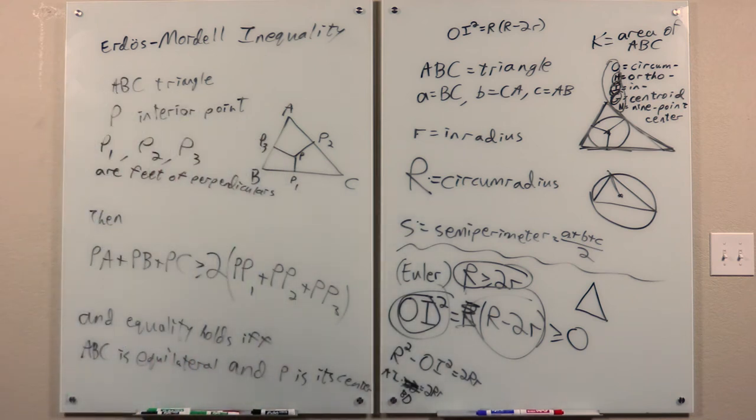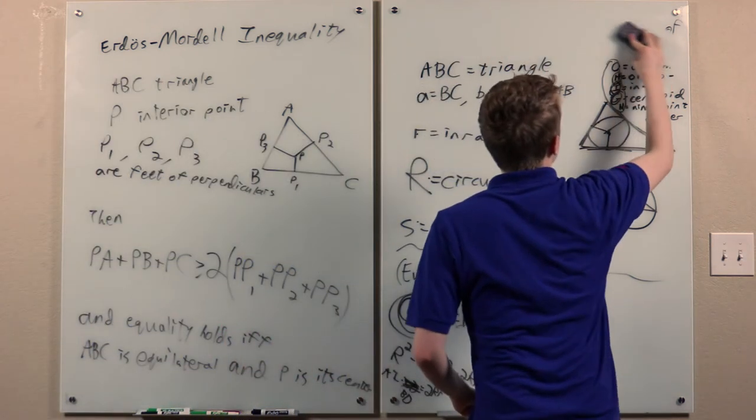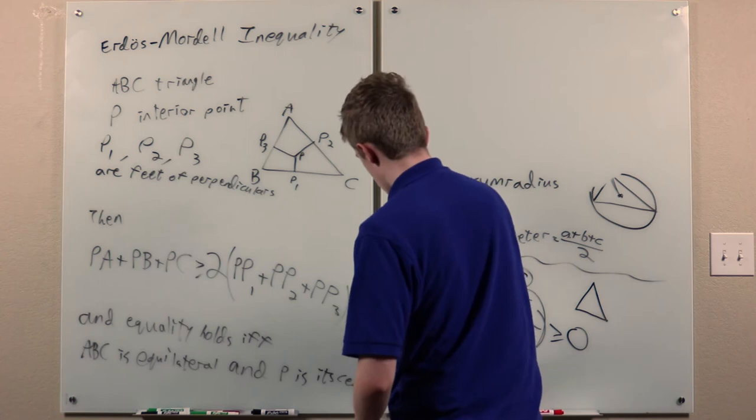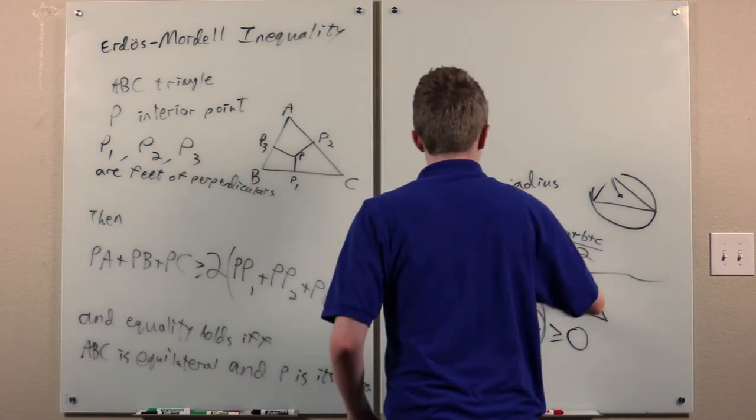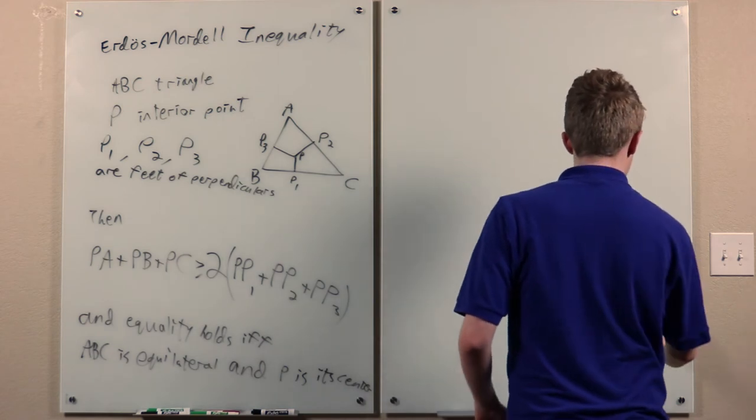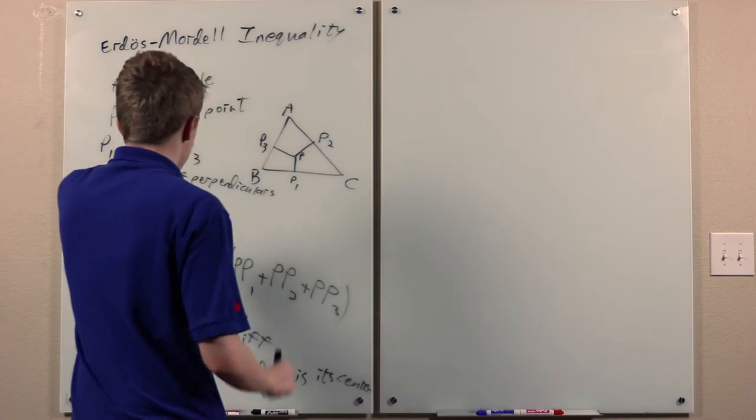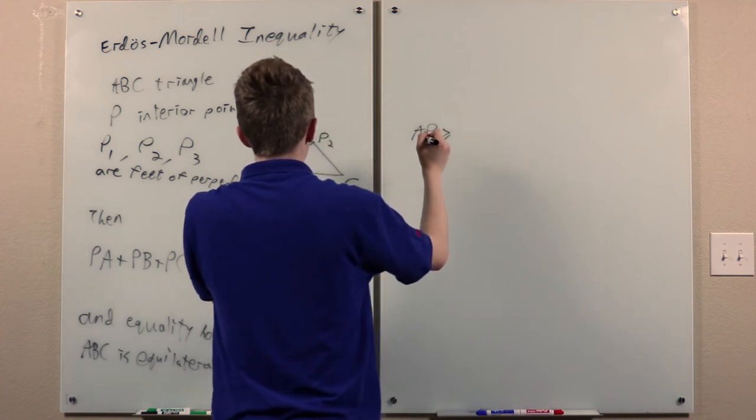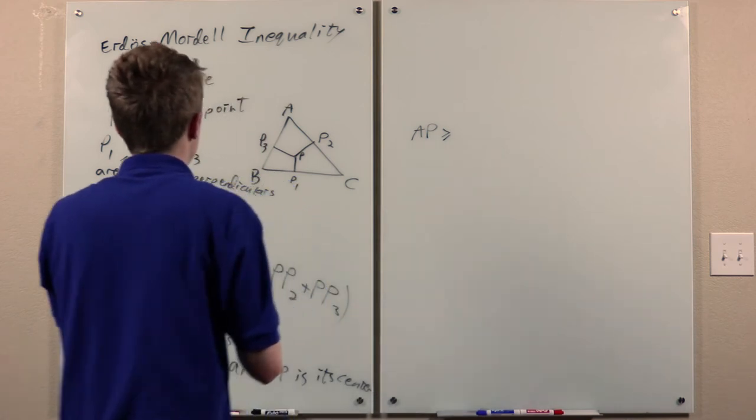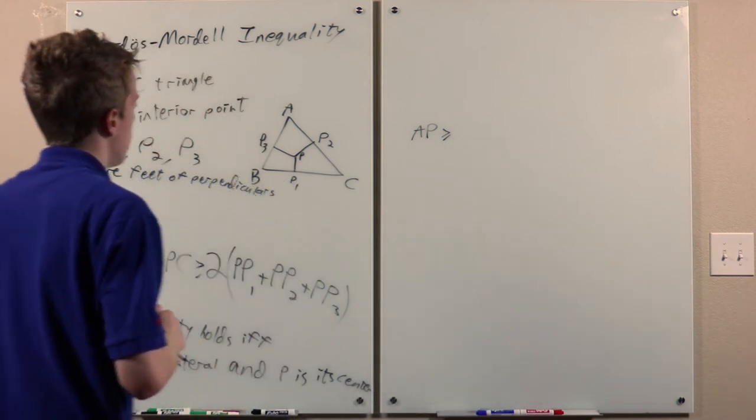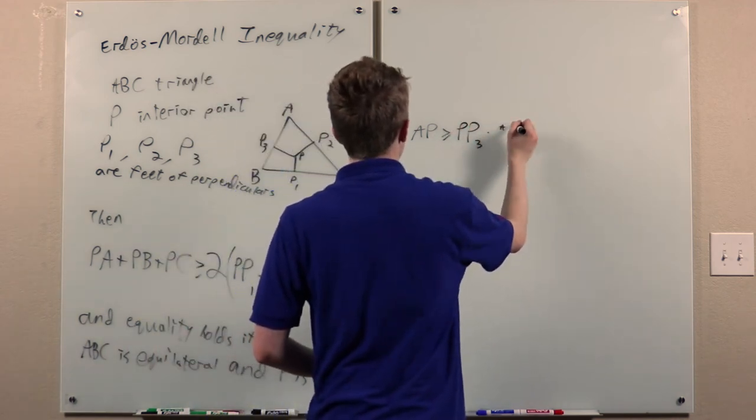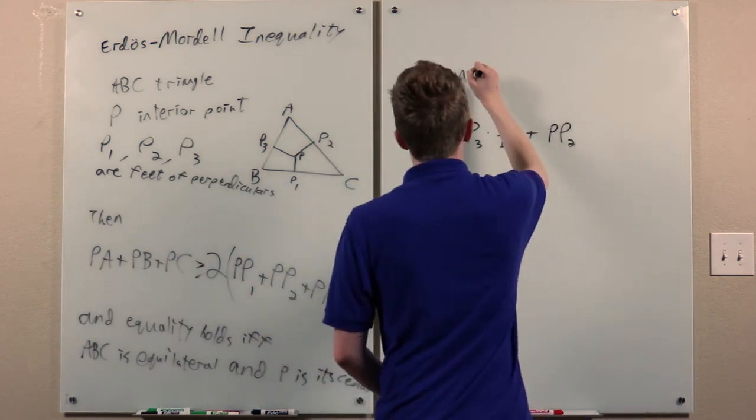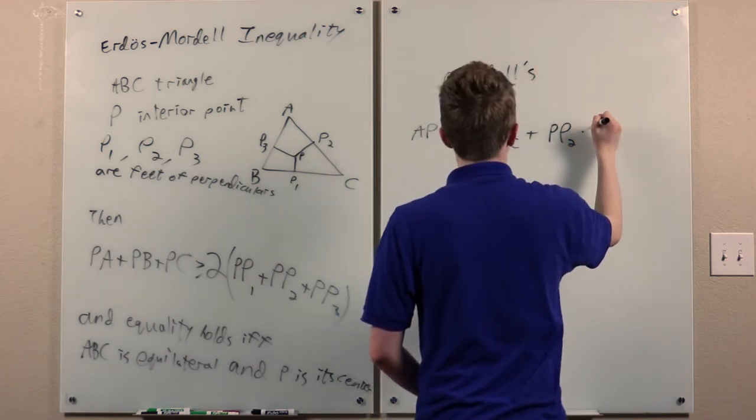So, how do we prove this? Well... We will use a lemma. And you can find more proofs of this, including this proof, in lemmas in Olympiad geometry. But let's use a lemma called Mordell's Lemma. Which says that, in this configuration, ap is greater than or equal to... It's... I believe, pp3 times ac over bc plus pp2 times ab over bc.